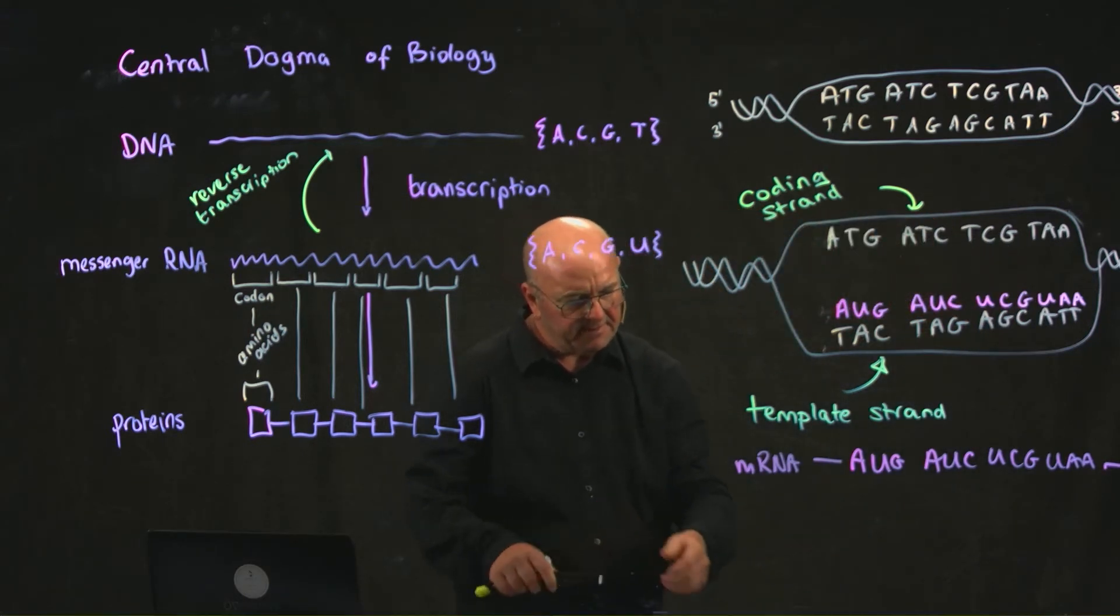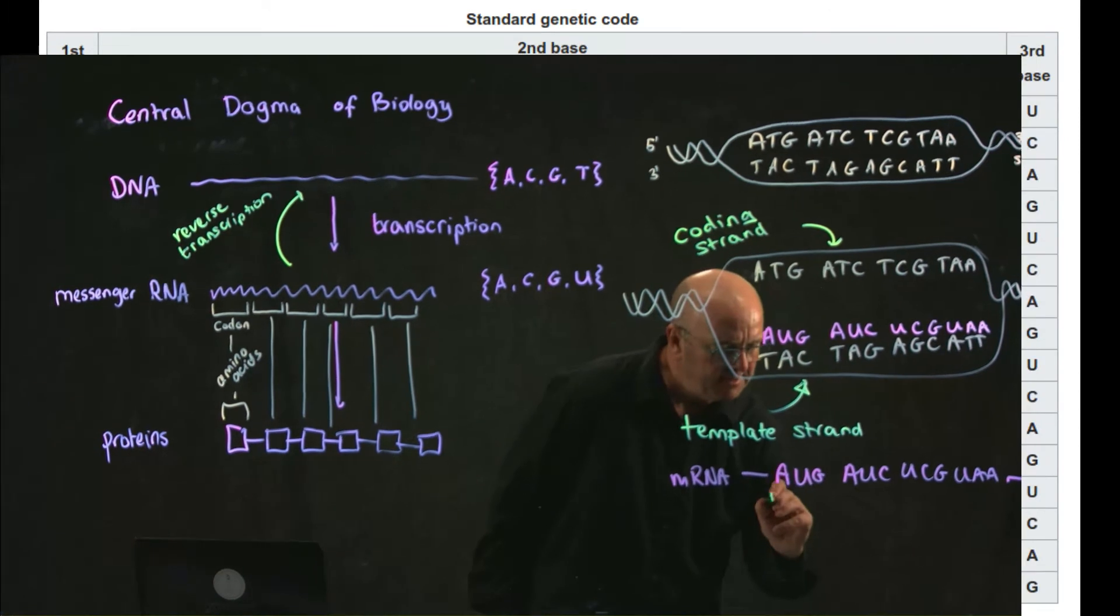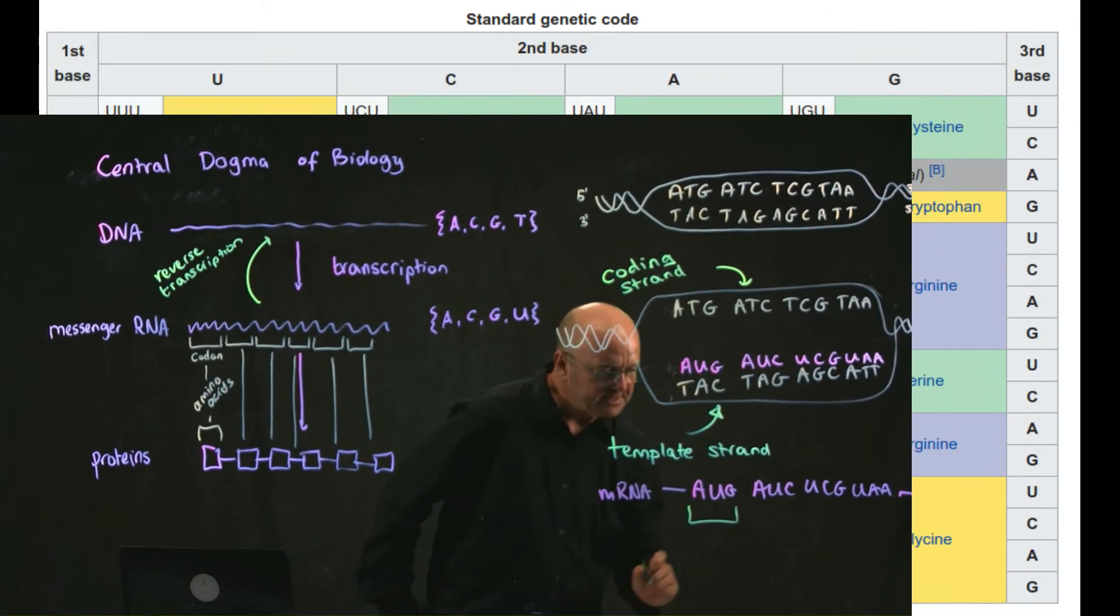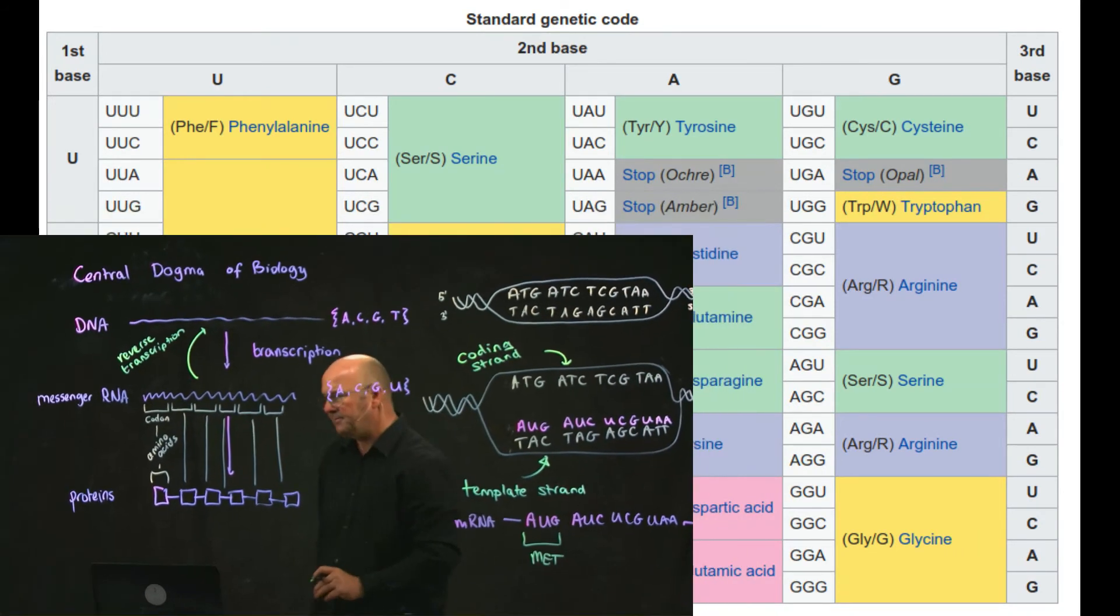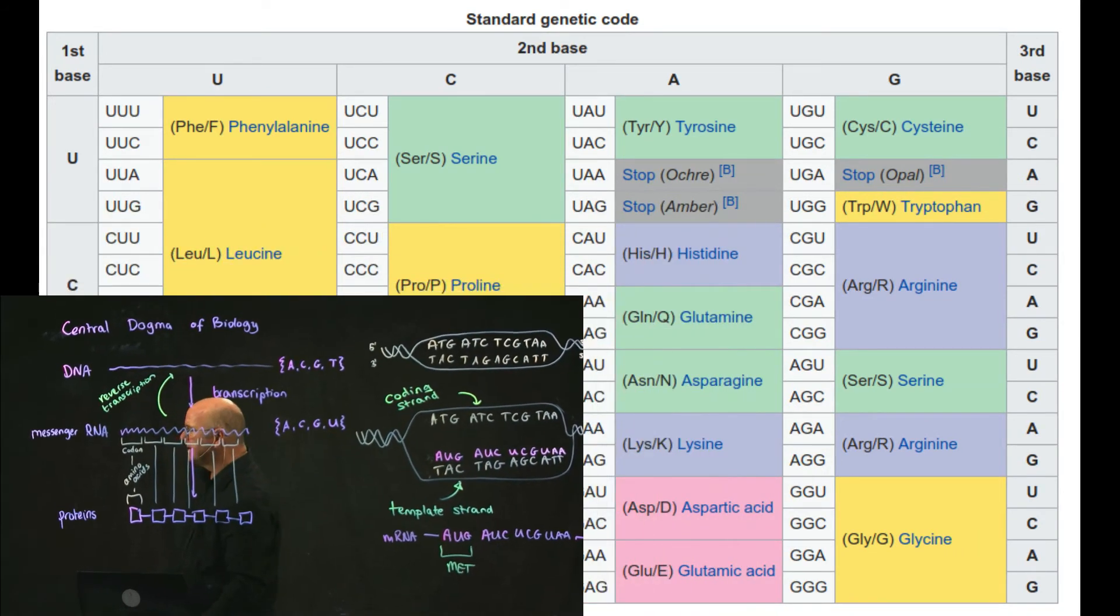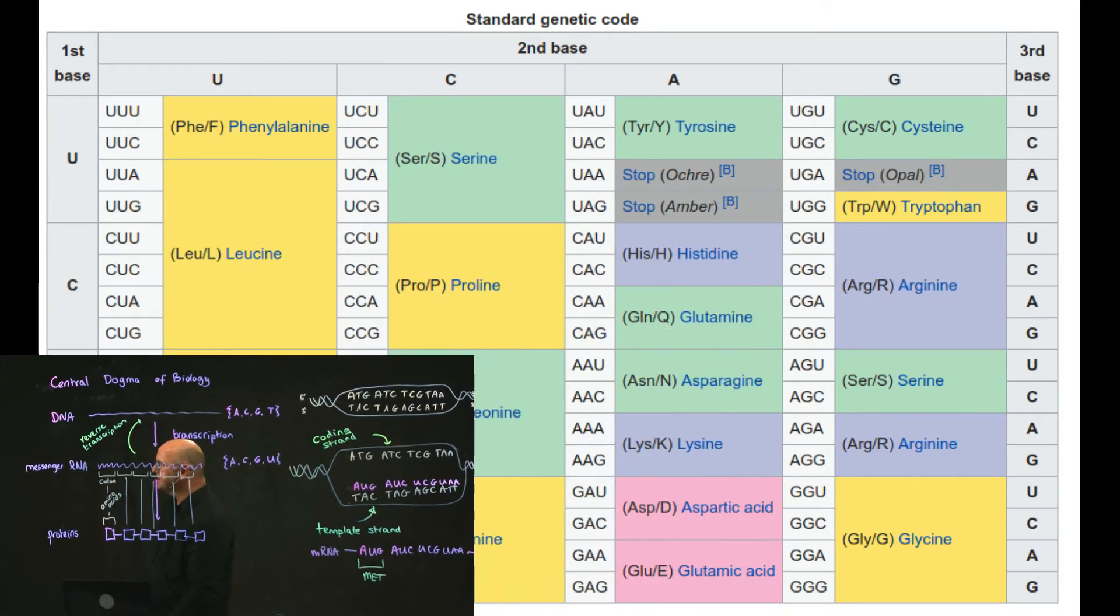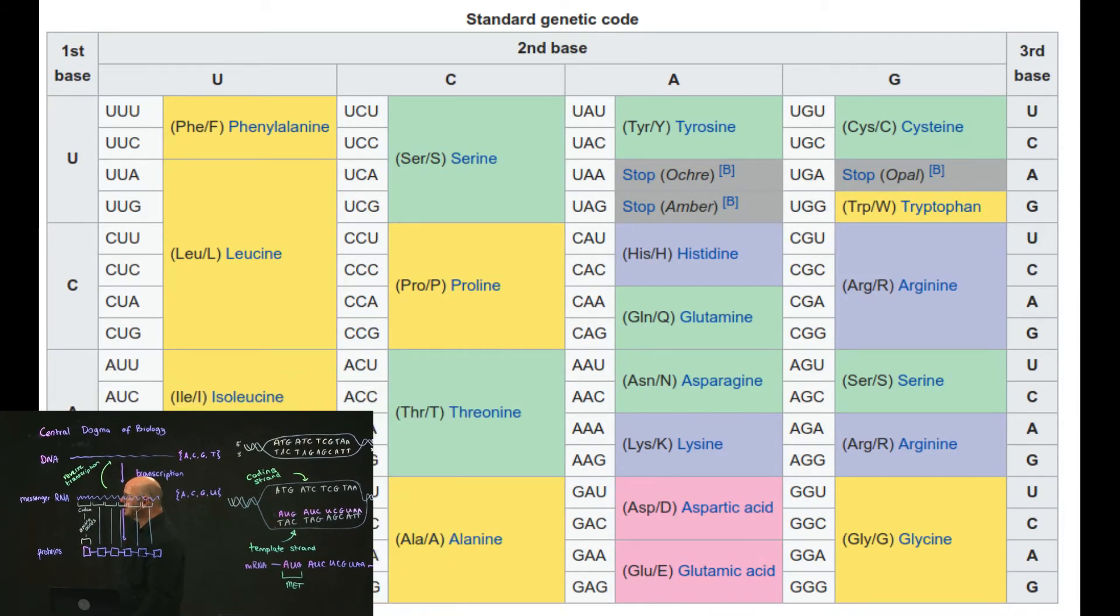And then we read our mRNA in batches of three. So AUG, if we look in our table, A in the first position, U in the second position, G in the third position is methionine. AUC, A in the first position, U in the second position, C in the third position is isoleucine.